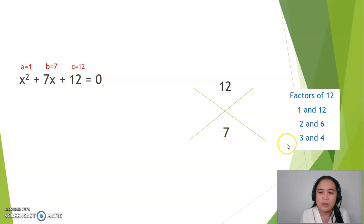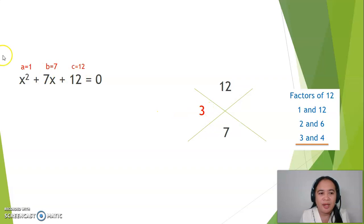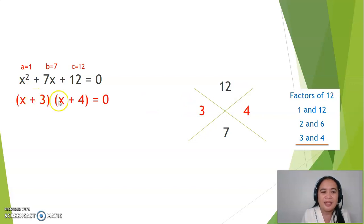In this case, we will consider 3 and 4. Why? Because when 3 and 4 are added, the result is 7. Writing 3 and 4 in the pattern f1 over a, we will have 3 over 1, because the value for a is 1. At the other side would be 4 over 1, or simply 4. Writing this in binomial form, we will have x plus 3 and x plus 4 equals 0.